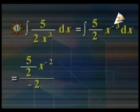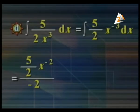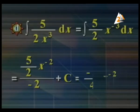Number (d): integration of 5 over 2 times x^3 dx. Remember, x^3 in the denominator becomes x^(-3). We add negative 3 plus 1, giving x^(-2). So 5 over 2 times x^(-2) over negative 2, plus c. The answer is negative 5 over 4 times x^(-2) plus c.